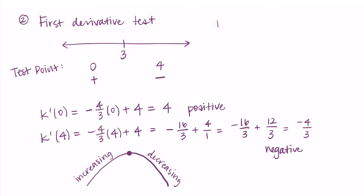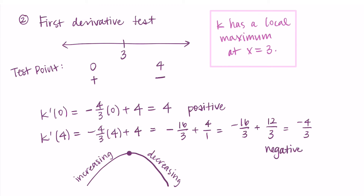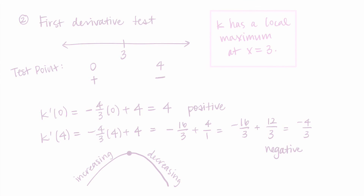Since the function changes from increasing to decreasing at x = 3, this is a local maximum. So at x = 3, the function k has a local maximum. Those are the steps of the first derivative test: find the critical numbers, put them on a number line, pick a test point in each interval, plug them into the derivative, check the sign, and determine which critical numbers correspond to local maximums or minimums.